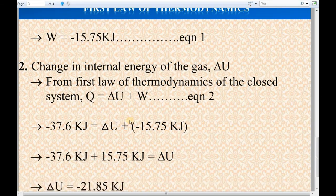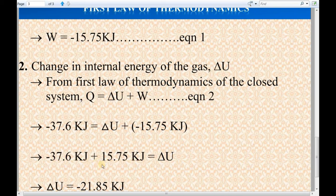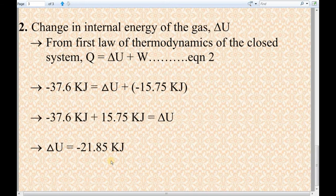We get minus 37.6 kJ equals delta U plus minus 15.75 kJ. Bringing minus 15.75 kJ to the LHS, we get minus 37.6 kJ plus 15.75 kJ equals delta U. In this LHS, minus 37.6 plus 15.75 is minus 21.85 kJ. So delta U equals minus 21.85 kJ. The value of change in internal energy of the gas is minus 21.85 kJ.